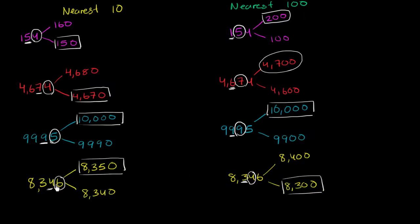Notice again — when we rounded to the nearest tens, we rounded up to 8,350, but when we rounded to the nearest hundreds, we rounded down to 8,300.